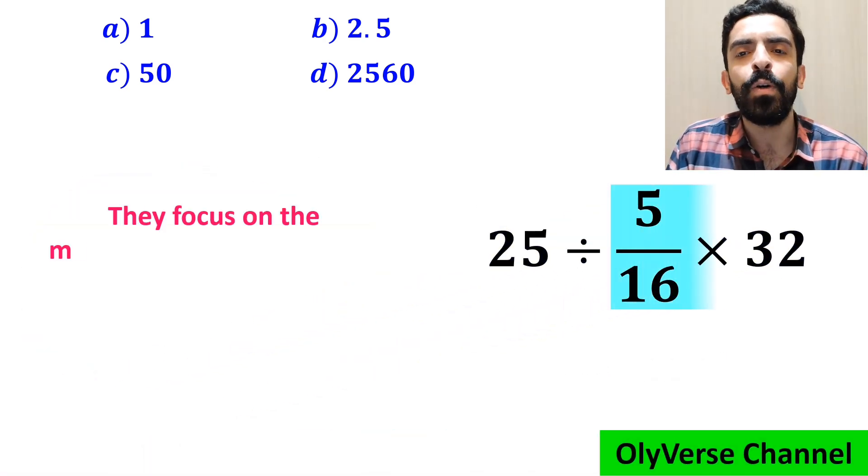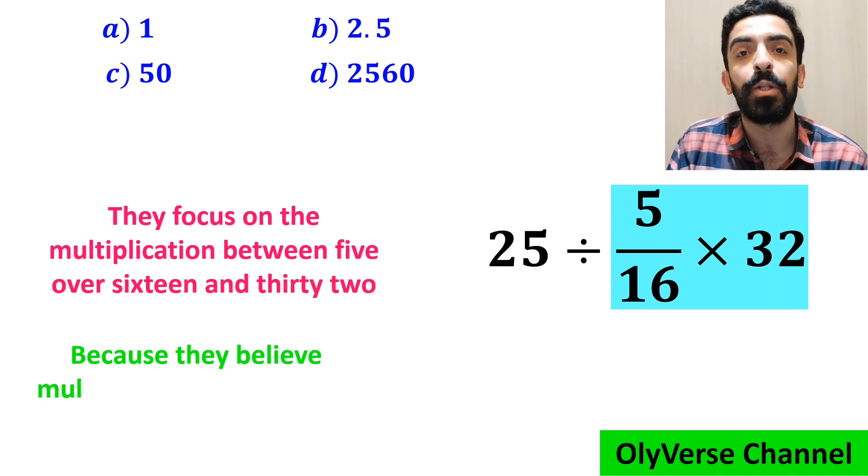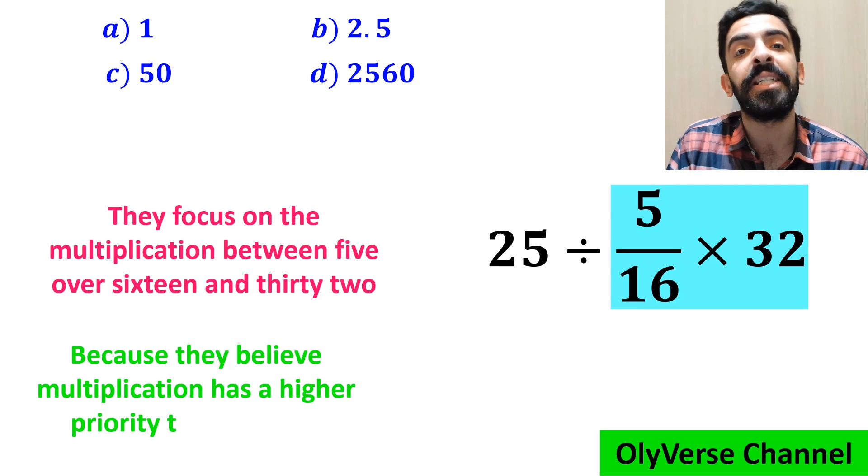And the next step, they focus on the multiplication between 5 over 16 and 32, because they believe multiplication has a higher priority than division.